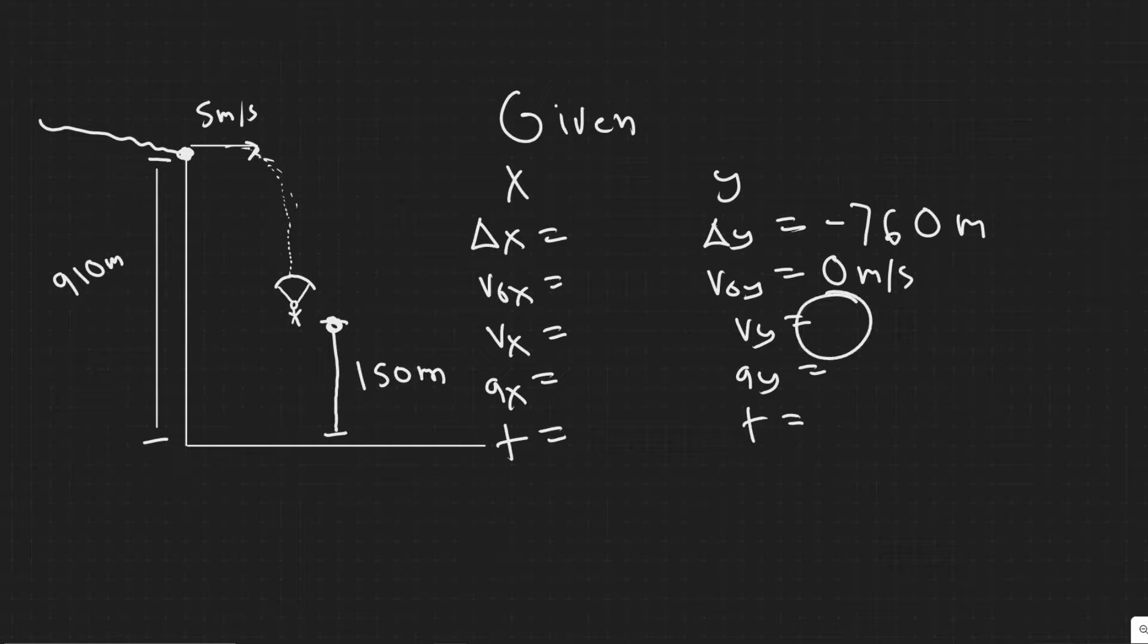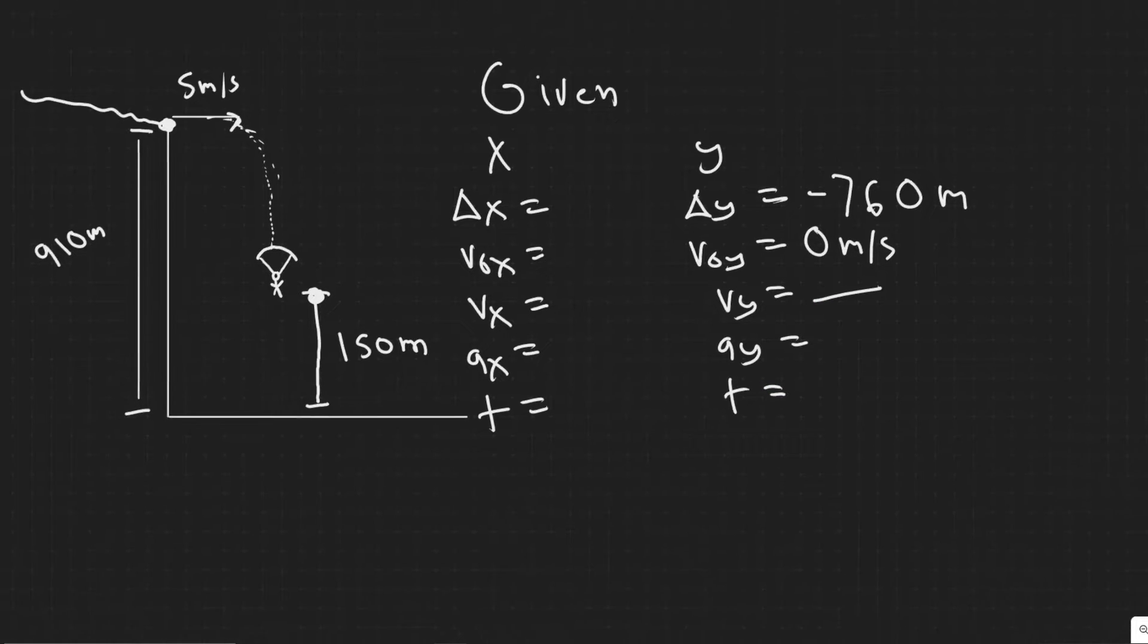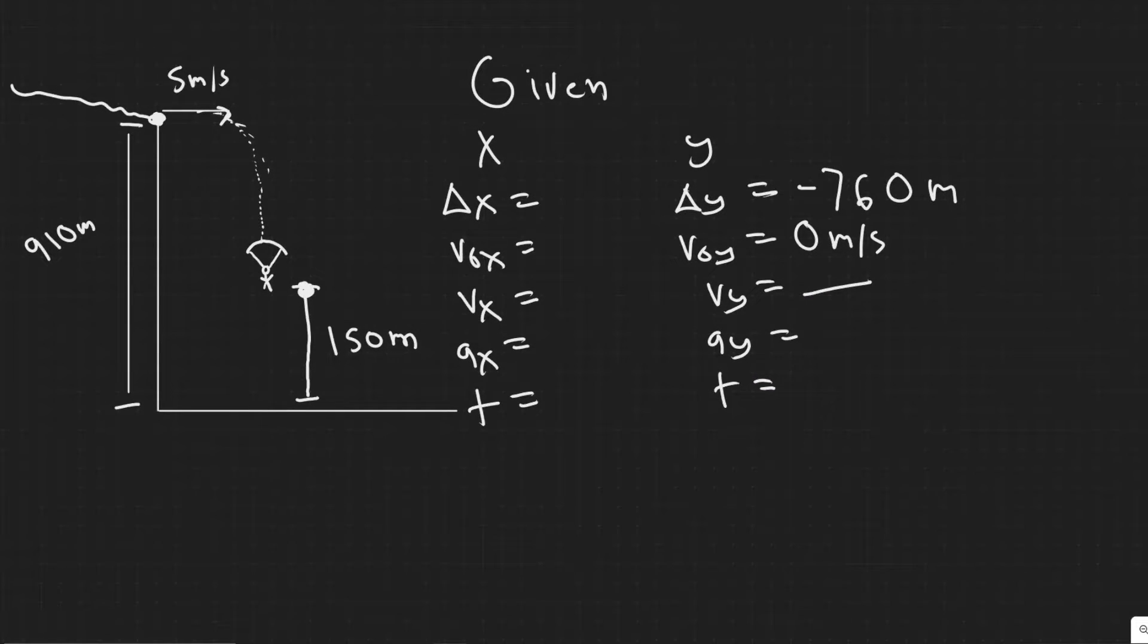We don't know the velocity in the Y at the end of this interval, but we don't need to know it to actually solve this. The acceleration in the Y is a constant. It's basically 9.8 meters per second squared. This is the acceleration due to gravity that everyone experiences when they're falling, and it's just a constant. It's going to be negative, and the reason that is, is because it pulls you downward. As this was negative because it's down, we got to stay consistent. This negative sign is the reason for that.